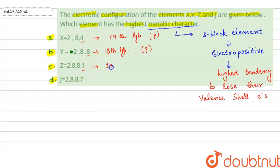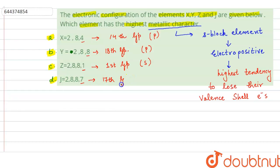For element Z, the configuration is 2,8,8,1. There is one electron in the outermost shell, meaning it belongs to the first group — so it is an s-block element. For element J, the configuration is 2,8,8,7, with 7 valence electrons, making it a 17th group p-block element.